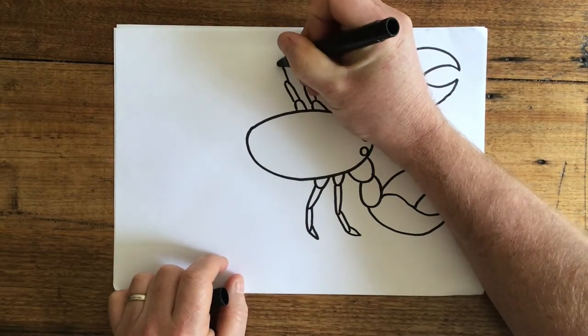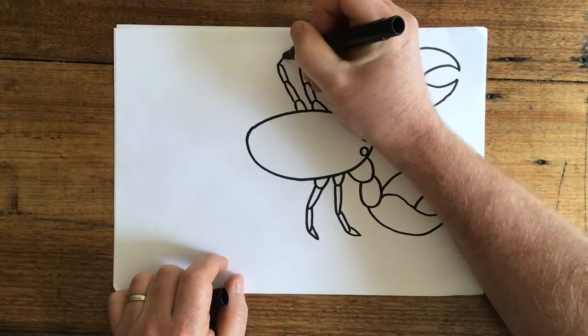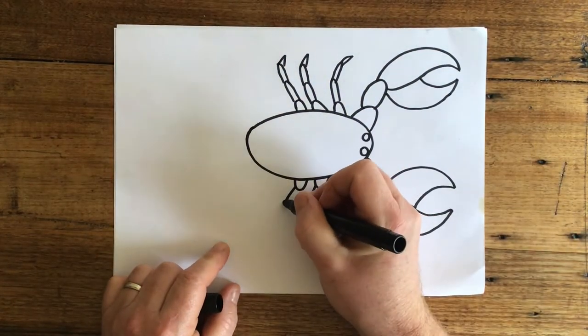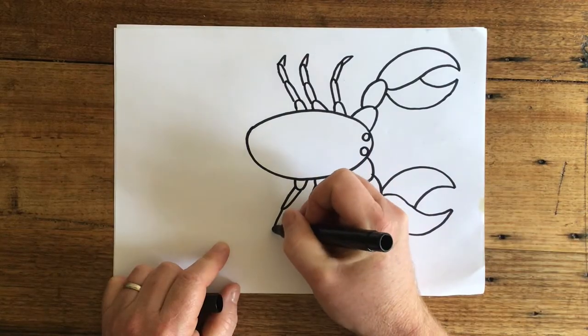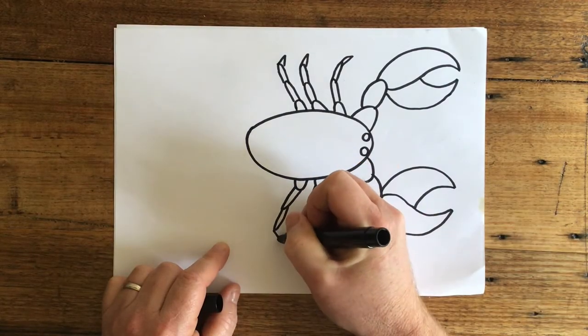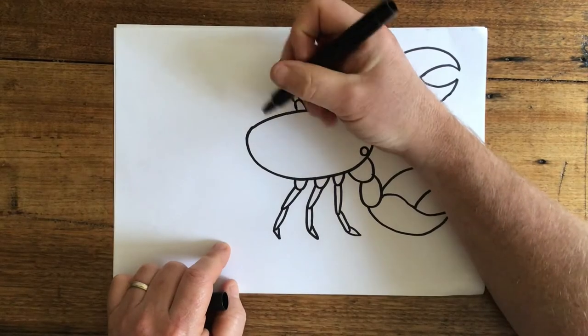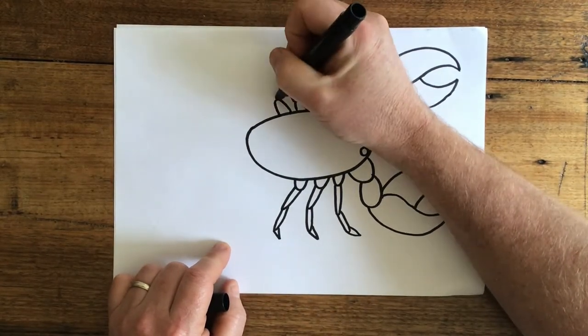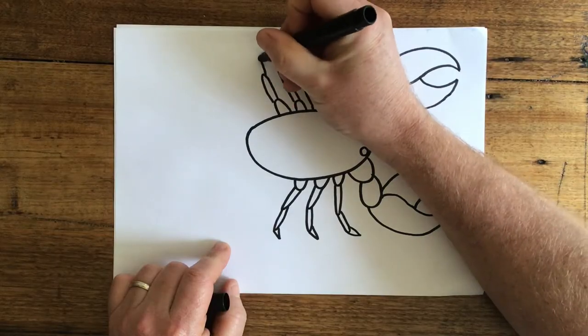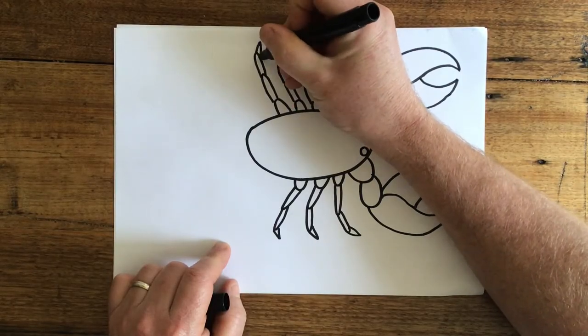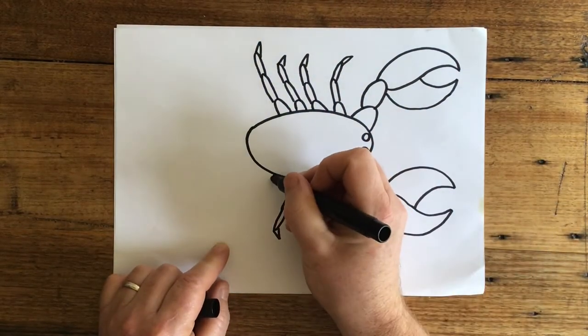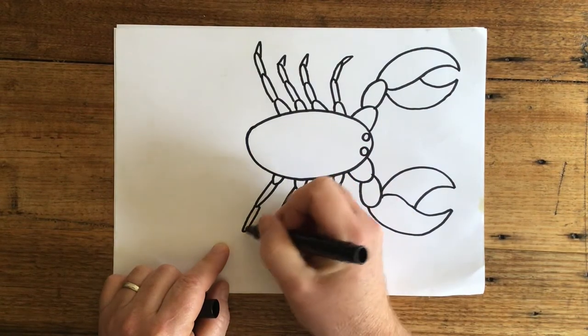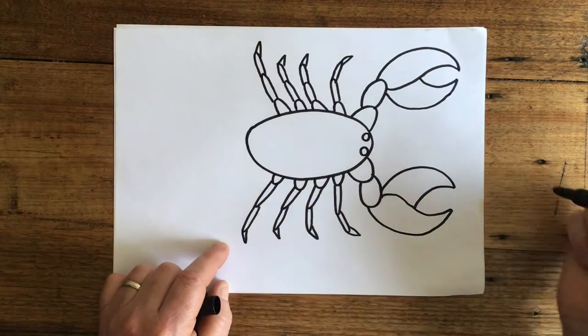One, two, and another leg. And one more set because a scorpion has eight legs. Like this.